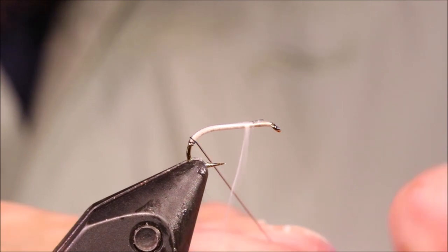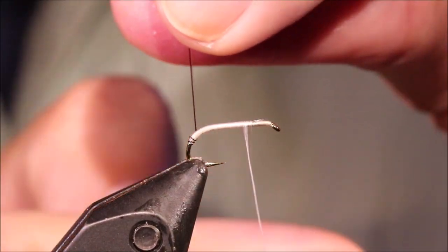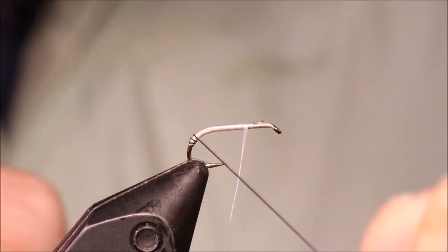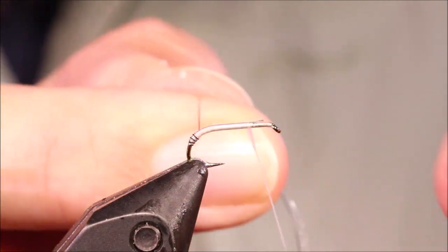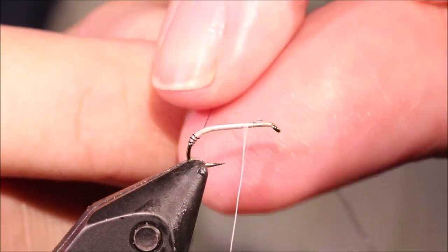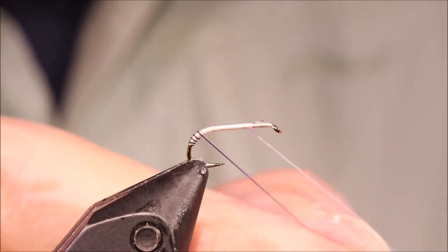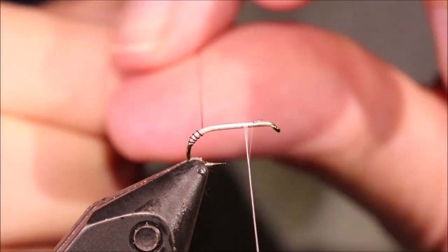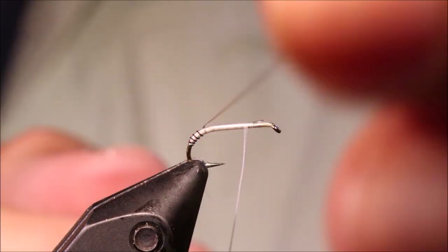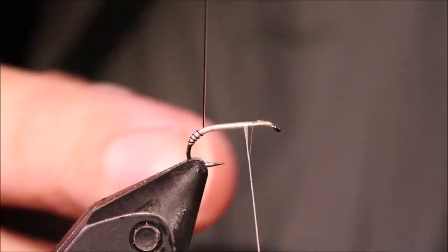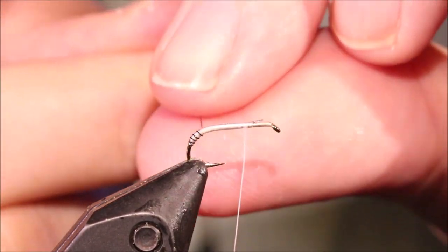Around and then pull down so that the butts, the turns are butting against each other. And you want to hold quite close to the fly when you're tying these because if you hold them away out here, which is easier, they'll start to separate as you wind.